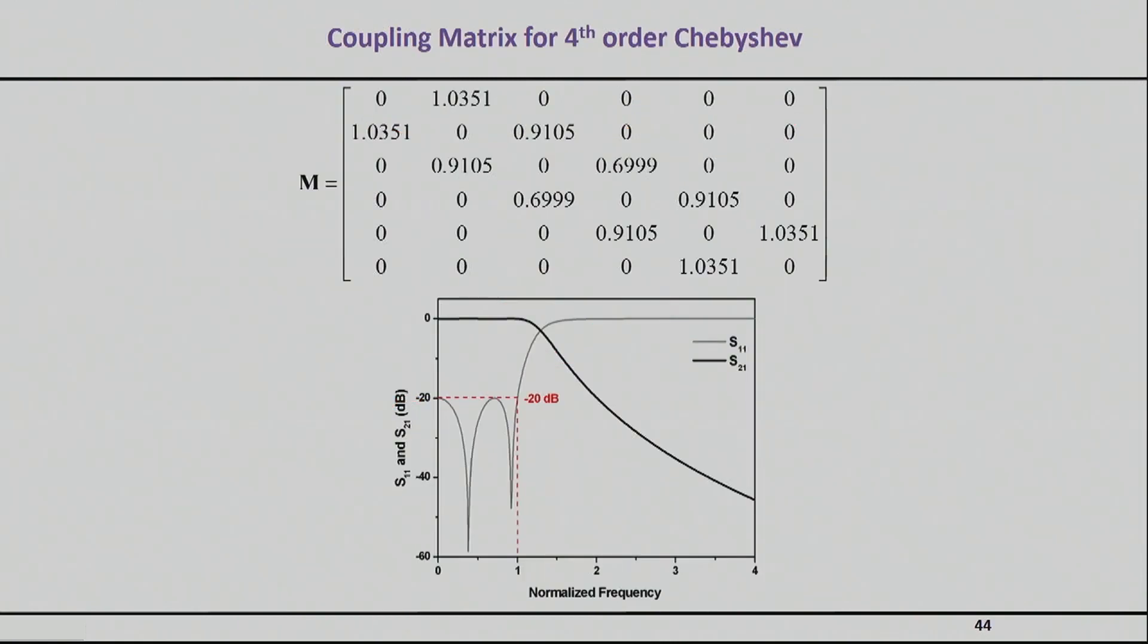Here's an example of an actual coupling matrix. If you were to synthesize a fourth order Chebyshev polynomial and use this to make a filter, you will end up with the numbers you see in this coupling matrix. I encourage you to actually do this so you get confidence with these numbers. If you plot the transfer function from these filters, you'll get this graph with the S21 and S11 plotted.